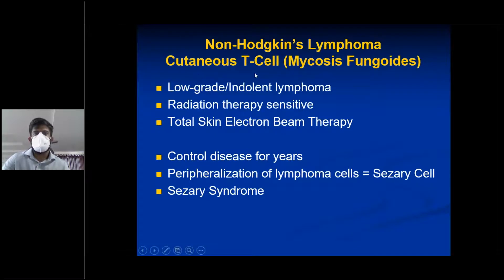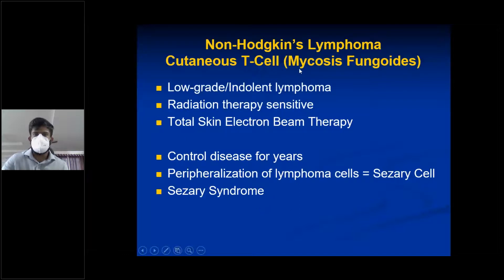Cutaneous T-cell lymphoma, also called mycosis fungoides, is a low-grade indolent T-cell lymphoma. Radiation therapy — specifically total skin electron beam therapy — is used and controls disease for years. There is peripheralization of lymphoma cells called Sézary cells, which is also called Sézary syndrome. This peripheralization happens in the later part of the disease.